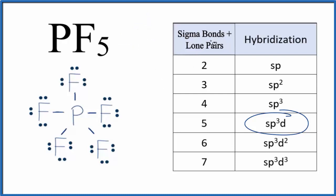First, we could look at the number of sigma bonds. Those are the single bonds. We have one, two, three, four, five single bonds. That's SP3D.